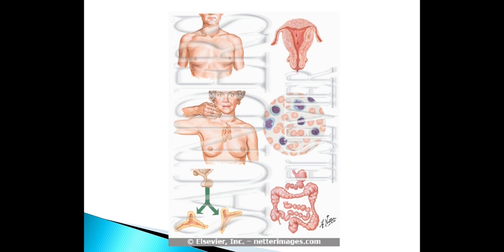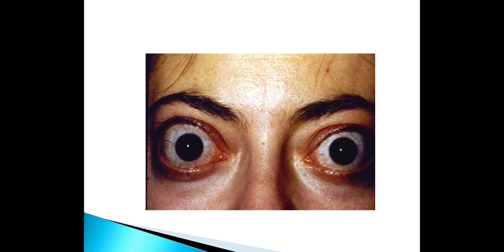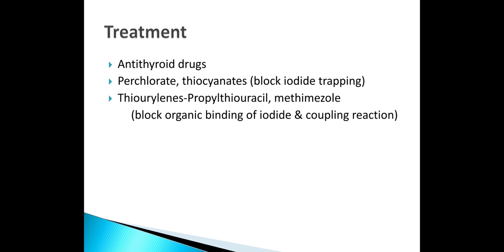You can see all the changes — how the eyeball is protruded; it acts on all the systems of the body. We have an exophthalmometer to measure how much protrusion has taken place. The treatment is antithyroid drugs like ferrous chloride and thiocyanate, which block thyroid trapping, and thionamides like propylthiouracil and methimazole, which block organic binding of iodide and the coupling reaction.